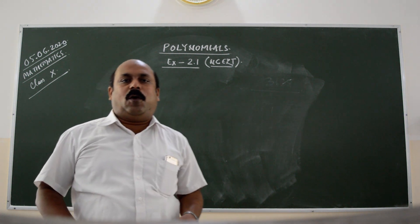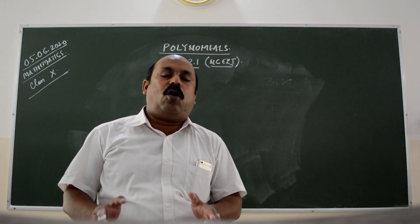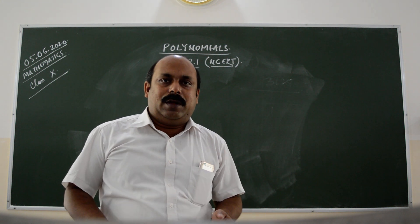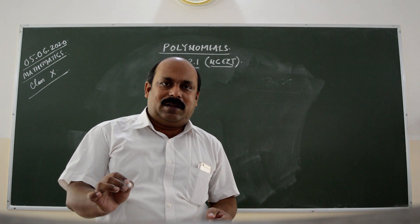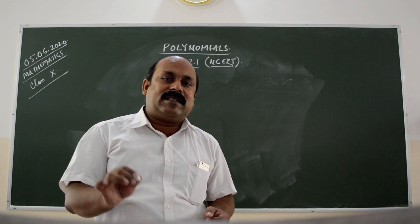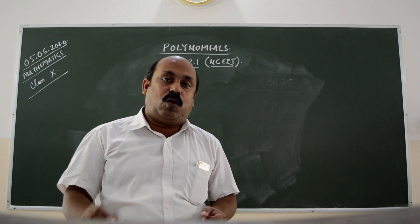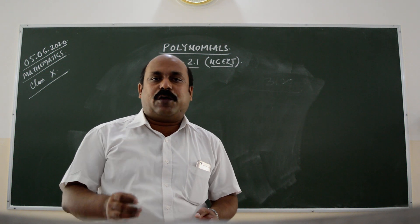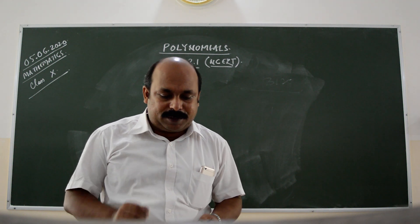This exercise is based upon geometrical meaning of zeros of a polynomial. As you all know, the number of times the graph of polynomial p of x intercepts the x axis gives us the number of zeros of that polynomial. Based on this concept, we are going to solve the questions of this exercise.